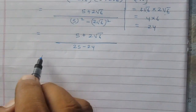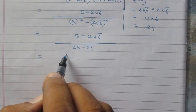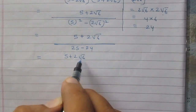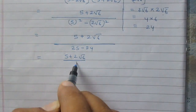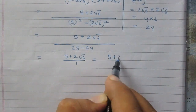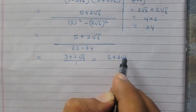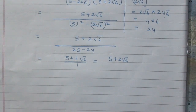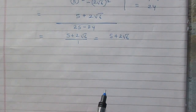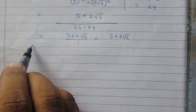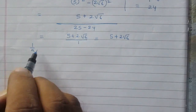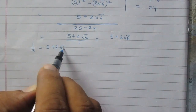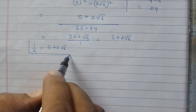Finally, the denominator equals 1, so we get 5 plus twice of square root 6 upon 1, which is simply 5 plus twice of square root 6. We have found that 1 upon a is equal to 5 plus twice of square root 6.